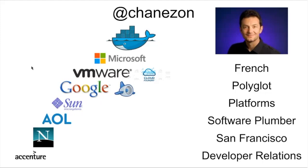A little bit about myself. I'm Patrick Chenazon. I work as a member of technical staff at Docker. Before joining Docker, I've been involved with many different companies — 10 years building platforms and then 10 years evangelizing them. At Google, I was in charge of the Google App Engine developer relations team when Platform as a Service was created. Then I moved to VMware to do developer relations for Cloud Foundry, an open source platform as a service. Then I moved to Microsoft, which has a platform as a service as well as infrastructure as a service with Azure. Last year I joined Docker to work on the Docker platform.